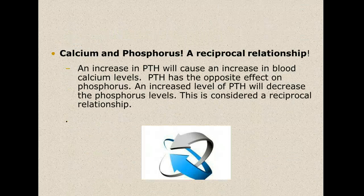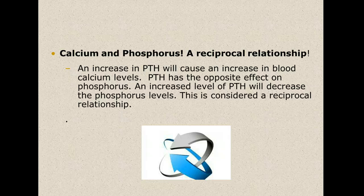Let's talk a little bit about phosphorus. An increase in parathyroid hormone will cause an increase in calcium, but parathyroid hormone has the opposite effect on phosphorus. If you have an increased level of parathyroid hormone, you'll have a decreased phosphorus. This is called a reciprocal relationship — you will usually never have a high calcium and high phosphorus, or a low calcium and low phosphorus. One is high, the other is low.